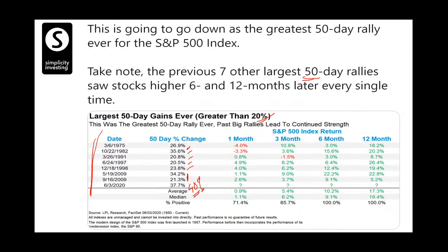What happened in the past when this occurred? Within one month, only twice did the market correct significantly. Every time after one month, the market was even higher. After three months it was higher every time except 1991. After six months it was higher in nearly every case. In 2009 it was up 22% and 12%. After 12 months it was even higher in every single case. So this time it's going to be the same. But many little investors will say it's time to get out and make their money safe.